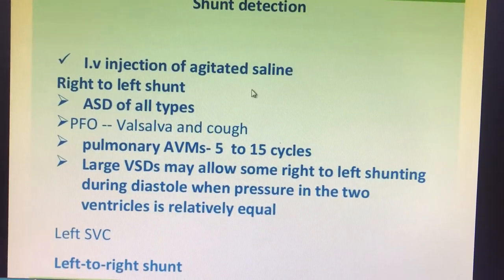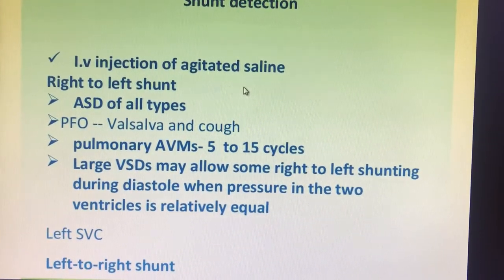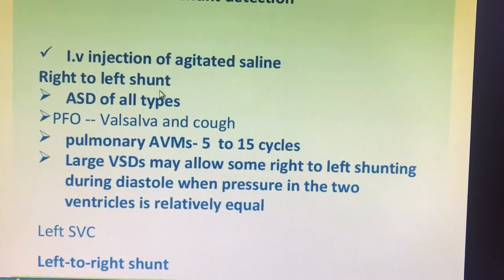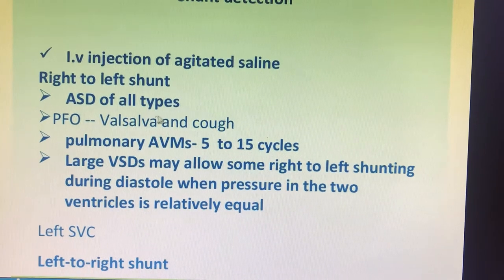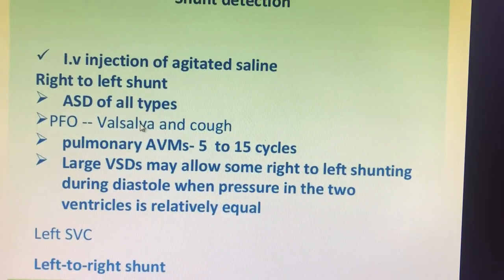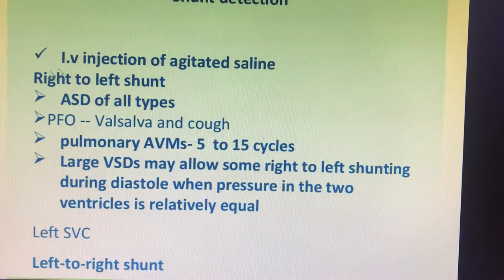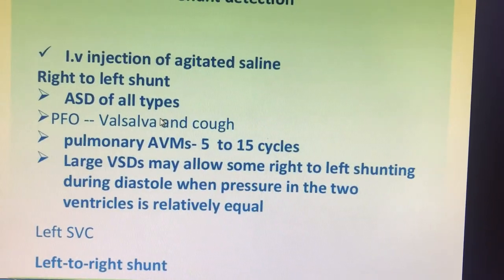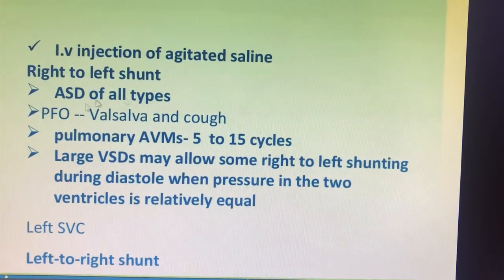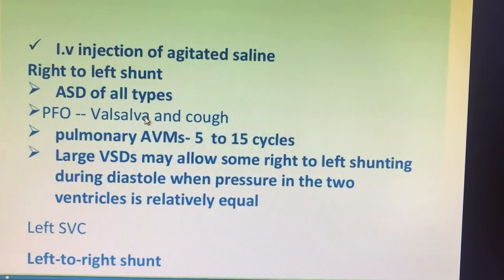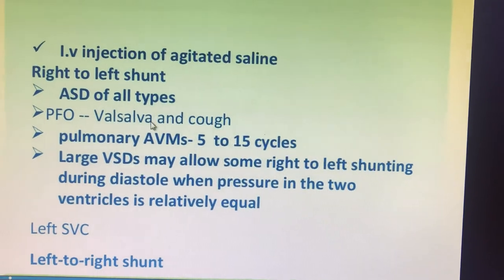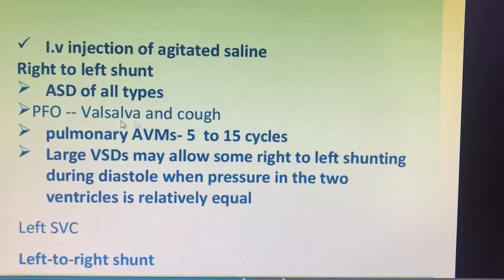You will inject the agitated saline intravenously and look for right-to-left shunts — anywhere there is a right-to-left shunt, or ASDs may have a left-to-right shunt, but a minimal right-to-left shunt will be there when you account for respirations. Even a PFO can be detected; the right-to-left shunt can be elicited by Valsalva maneuver, and we can get the right-to-left shunt during the rest of the saline injection.